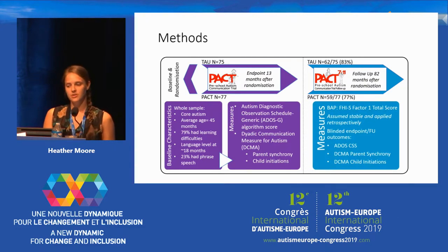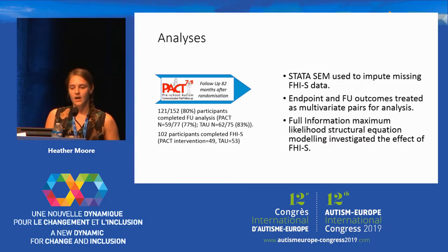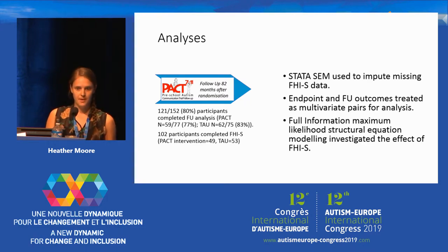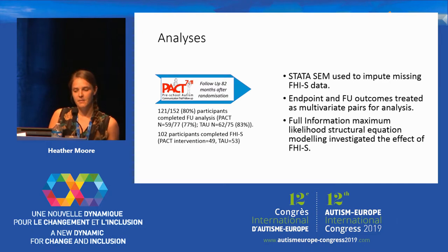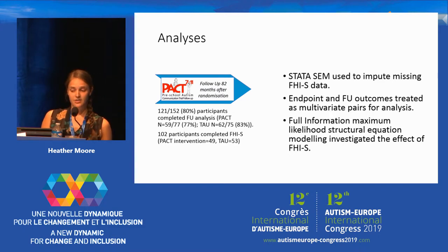In addition to this, we also used the FHI to measure the broader autism phenotype in the group. 121 of the participants from the original PACT study completed the follow-up study, and of those, 102 completed the FHI. We imputed the missing FHI data and combined endpoint and follow-up, treating them as multivariate pairs in analysis, and used structural equation modeling to investigate the effect of FHI on those child outcomes.